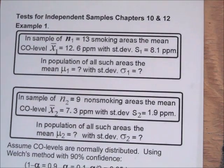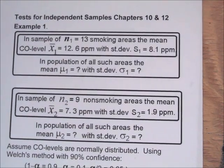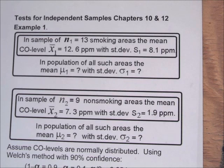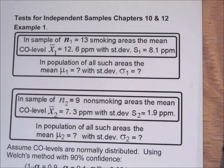Test for independent samples. Previously we did a test of dependent samples where we had two sets of data from the same 20 people, but these are independent samples. We have a sample of N1 equals 13 smoking areas — areas where smoking is permitted.